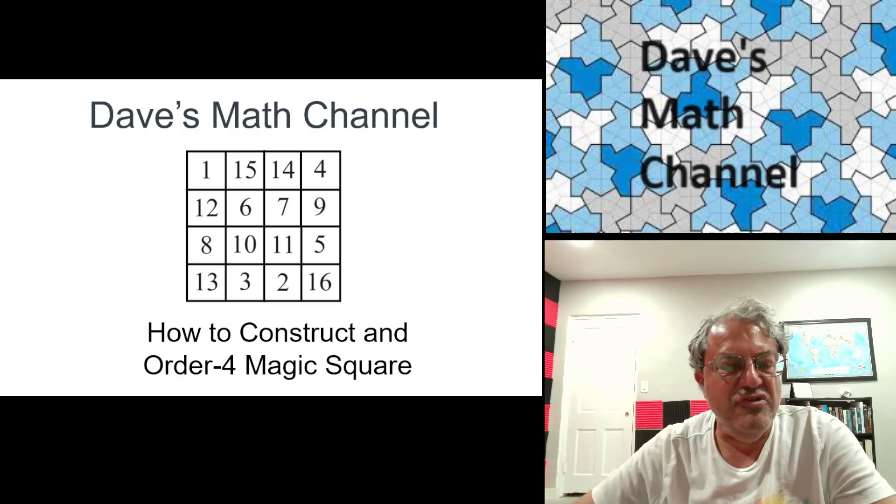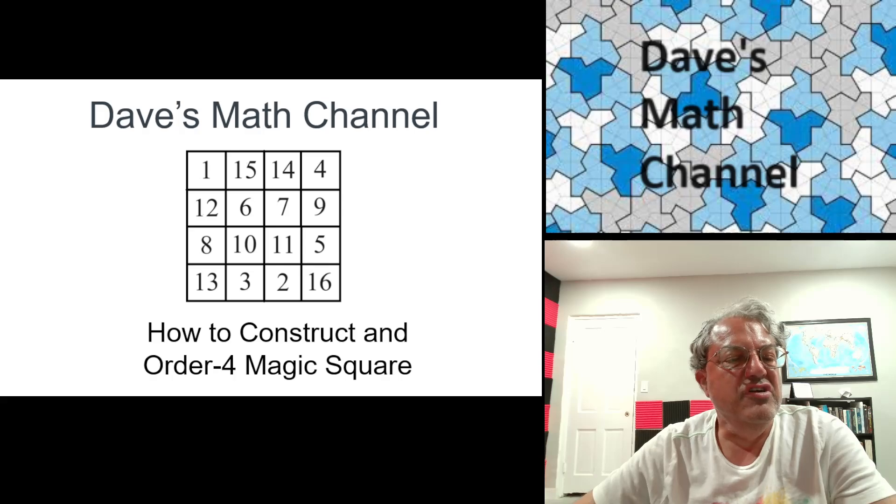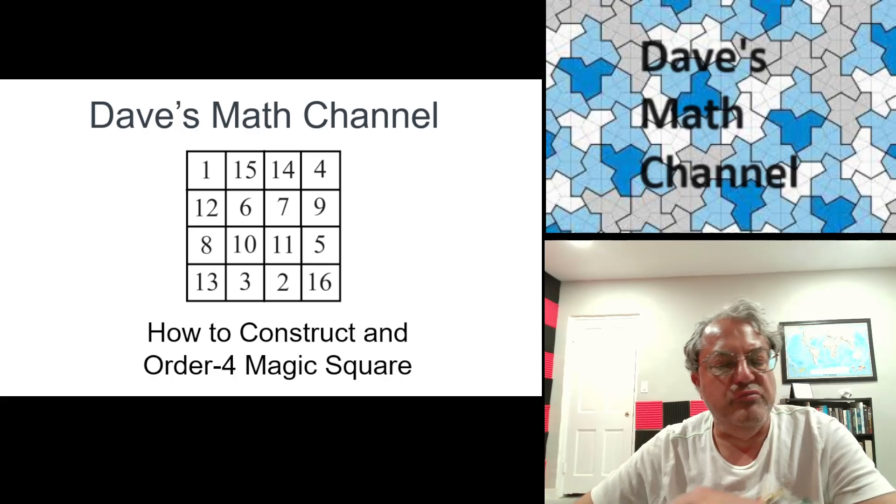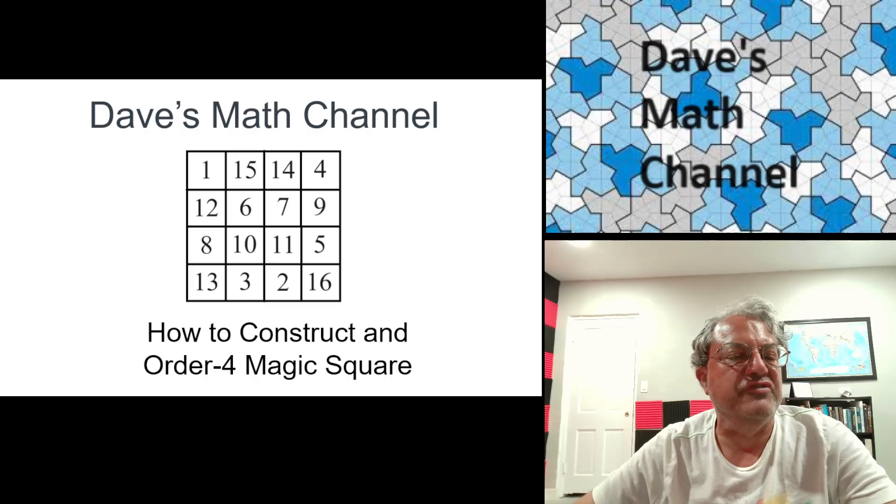Four is even, as you know, and it's the simplest case I haven't considered yet. Here's a picture of an order-4 magic square, and I'm going to show you how to construct it. Let's begin.